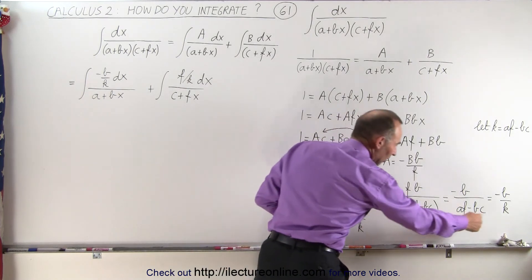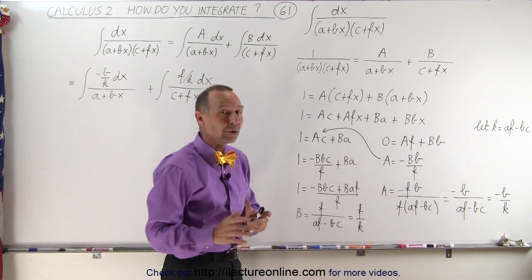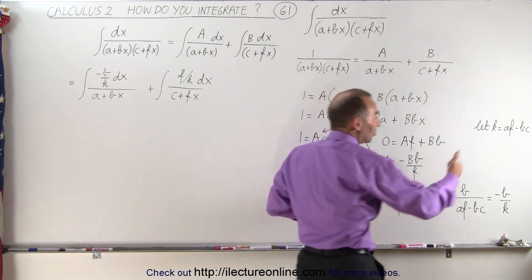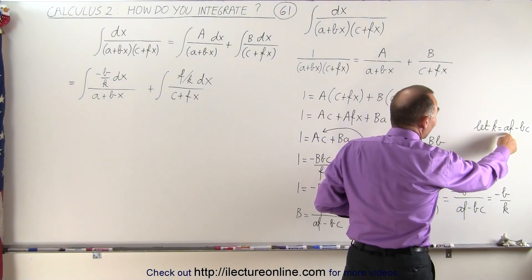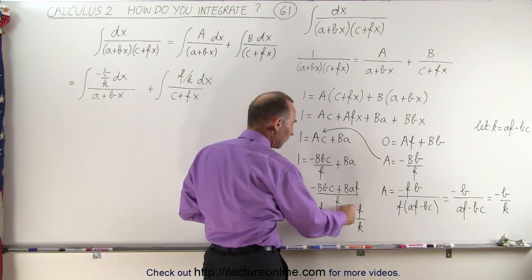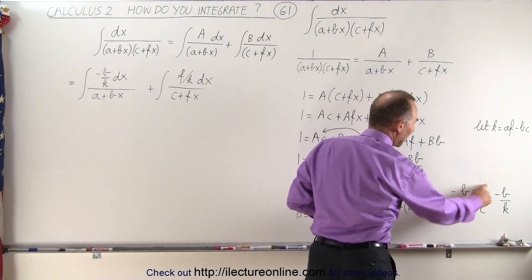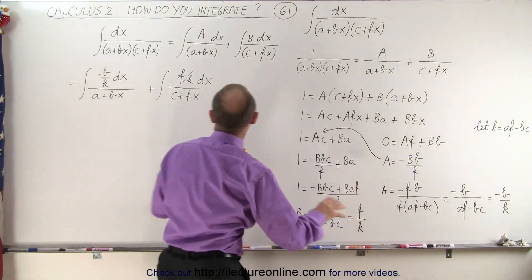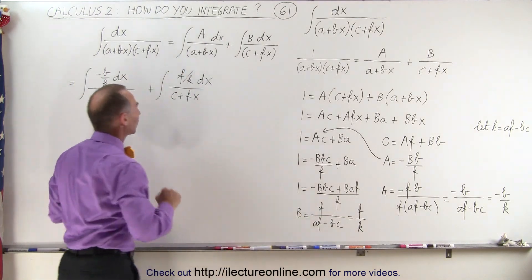Notice that in both cases the denominators are the same. So we're going to then use a constant k to be equal to af - bc, so we can very easily then write B as -f over k, and A as -b over k, and then we substitute that back into our two integrals right here.